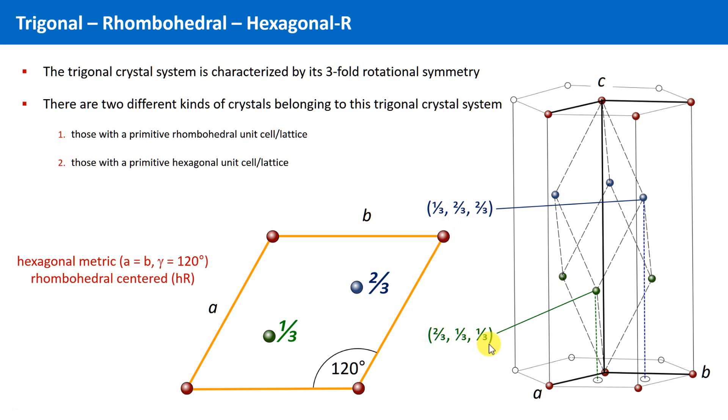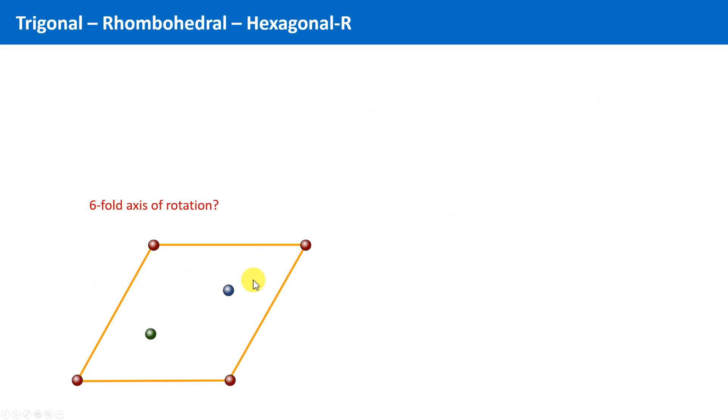Now, as we have this hexagonal metric, does this also mean that we have a six-fold axis of rotation, perhaps here at the corner of the unit cell? Let's have a look! We rotate the unit cell by 60 degrees stepwise.